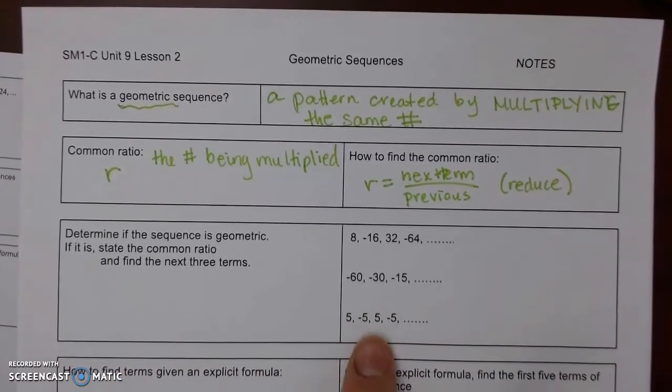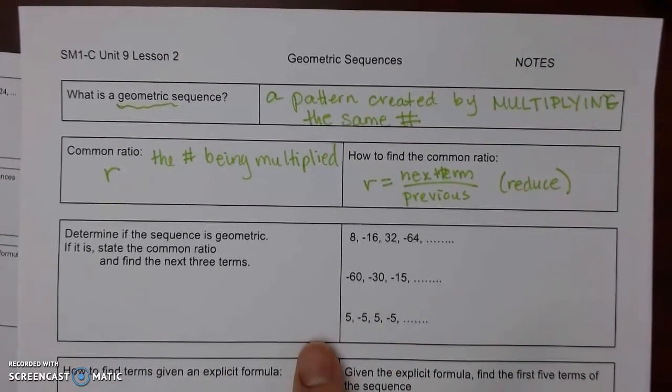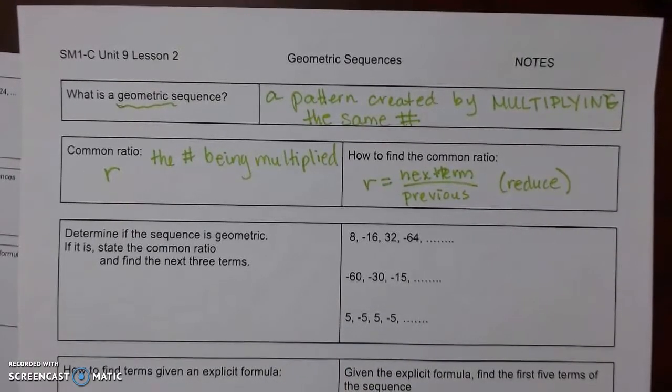So we've got three sequences. Determine if the sequence is geometric. If so, find the ratio and then find the next three terms.